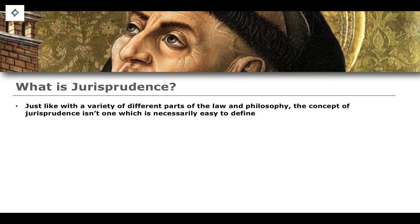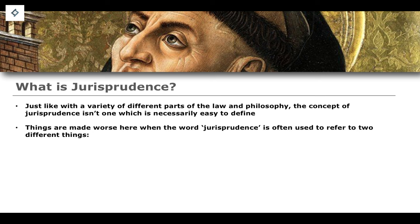What is jurisprudence? Just like with a variety of different parts of law and different areas of philosophy, sociology, and criminology, the concept of jurisprudence isn't one which is necessarily easy to define. It is a thing that you study and understand more than a thing that you define. We can get an etymological definition — what the word and its derivation comes from — but that doesn't necessarily give us any indication as to how that word is used in today's colloquial understanding of the English language.